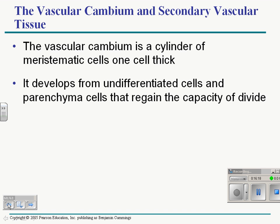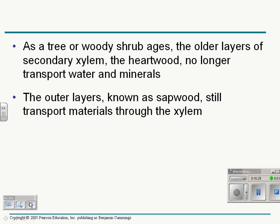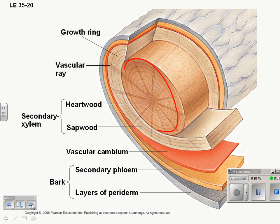This is just a description of the vascular cambium. It's one cell thick, and then meristematic means they do mitosis. And then you don't really need to know the second part of that. And then as the heartwood, as a tree or woody shrub ages, the older layers of secondary xylem, the heartwood, no longer transport water and nutrients. The outer layers, known as sapwood, still transport minerals. So in the very center, you're not getting any water transported. You can cut in and find the sap. The wood that's all green, and that's where water and nutrients are transported up a plant.